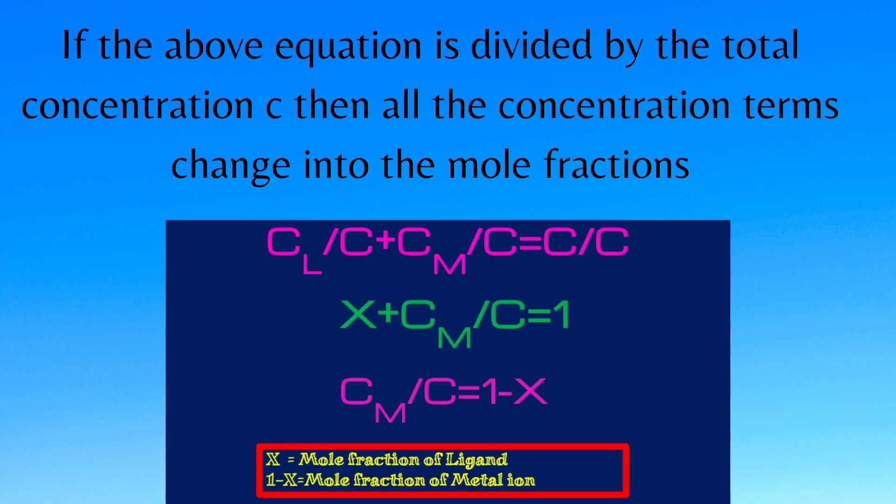If all the terms in equation 1 are divided by total concentration C, all the terms change into mole fractions. Here X represents the mole fraction of ligand and 1 minus X represents the mole fraction of metal ion.